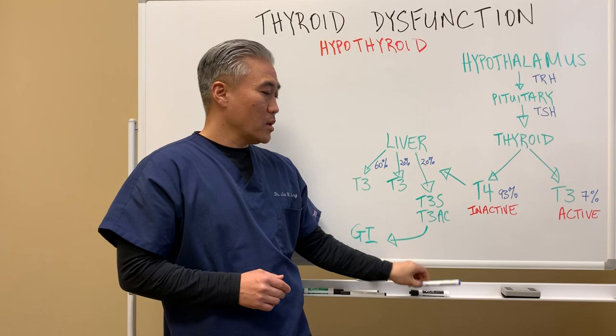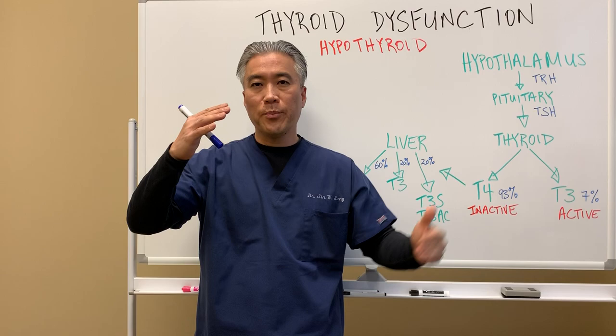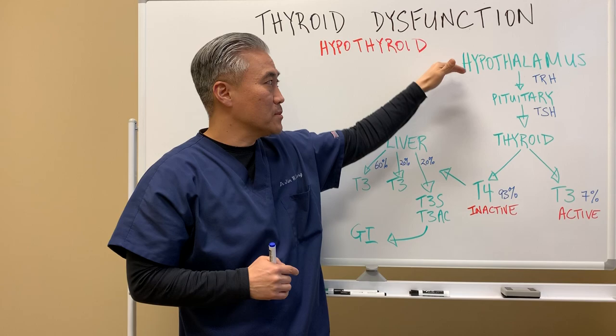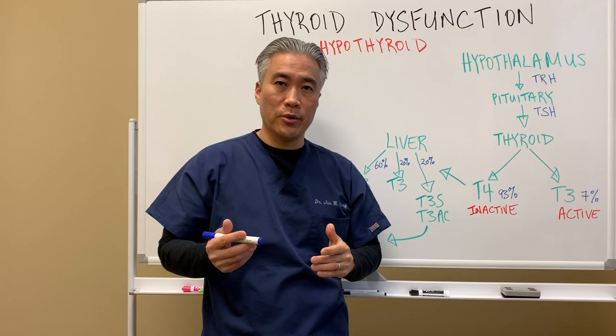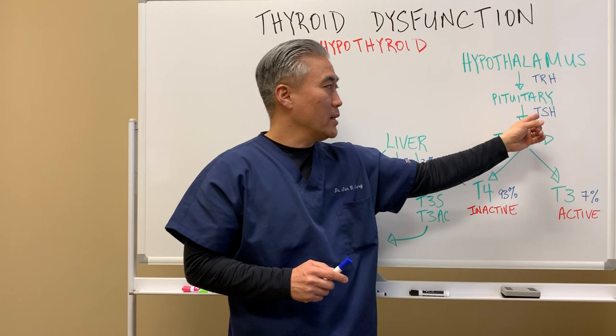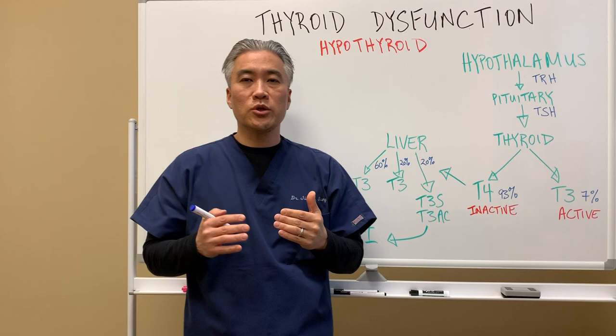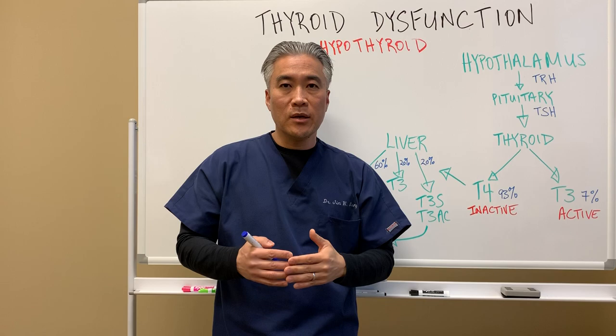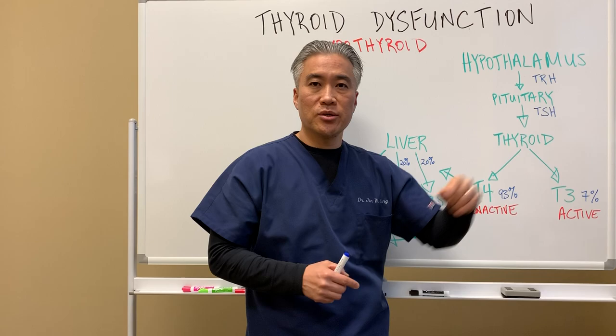Thyroid physiology actually starts in the brain and has a loop back. A part of the brain called the hypothalamus releases a hormone called TRH, or thyroid releasing hormone, which sends a signal to another part of the brain called the pituitary gland. The pituitary then releases TSH, or thyroid stimulating hormone — the marker most doctors will check when you complain about fatigue.